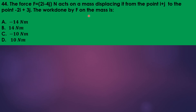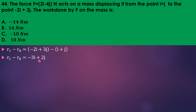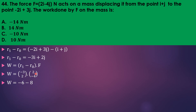A force F acts on a mass, displacing it from one point to another. Work done equals force dot displacement. The displacement vector is found as final position minus initial position = −3i + 2j. Dotting with force vector 2i − 4j: (−3)(2) + (2)(−4) = −6 − 8 = −14 newton metres. Answer is A.